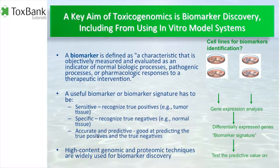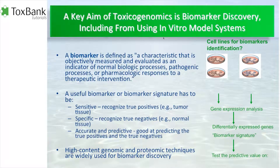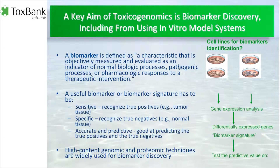Another key aim of toxicogenomics is biomarker discovery. This comes from the Cerat project and the Toxbank work, which has an emphasis on in vitro models, as the overall idea is to replace animal experiments in certain contexts. Shown here is some text about what a biomarker is — some kind of characteristic that can measure, evaluate, and be an indicator of something you would like to study. Toxicology has a strong association to pathological processes at the cell or organ level.